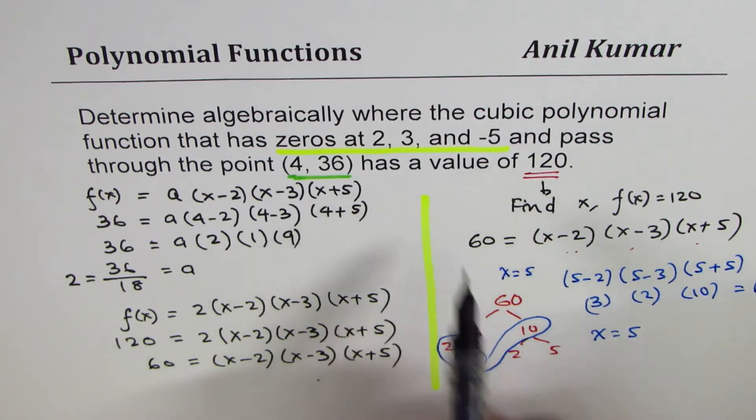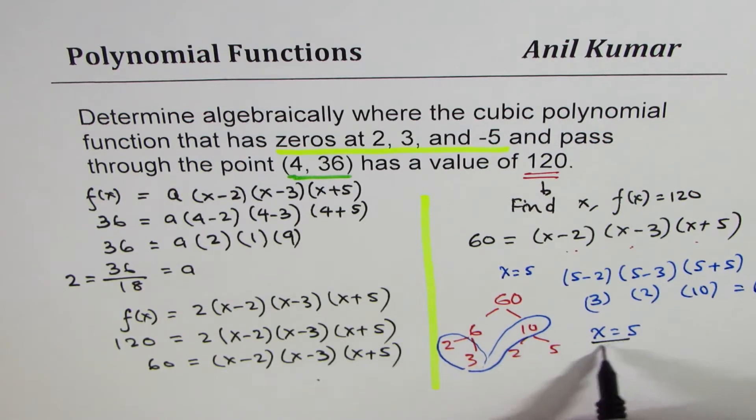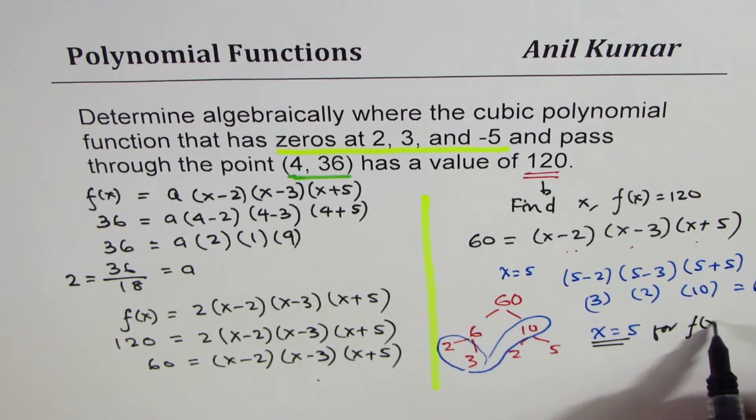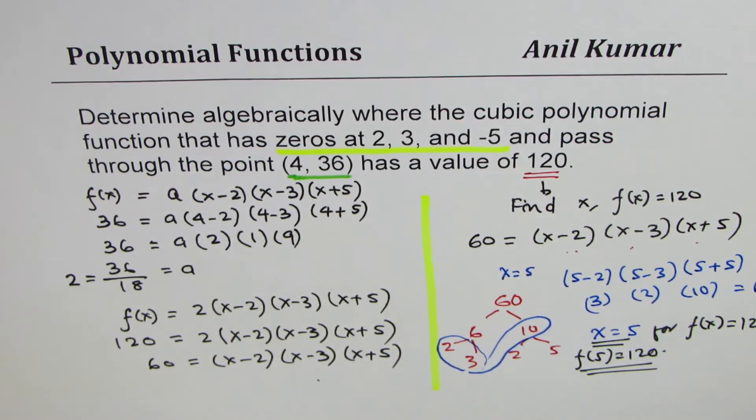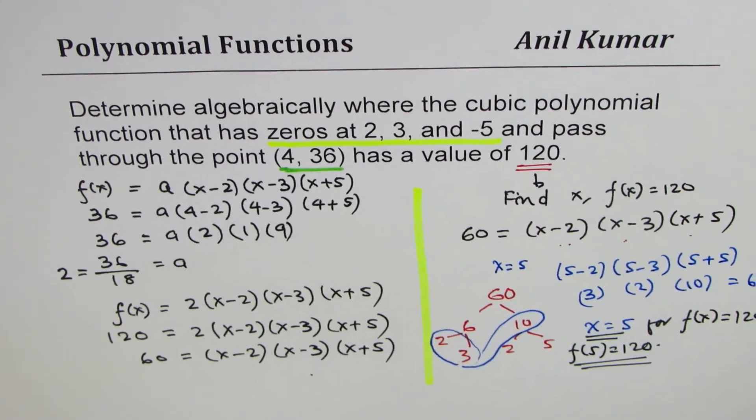So the answer here is that x equals to 5 for f(x) to be equals to 120. So what we are saying is, f(5) is equals to 120. So that is how I'll suggest you to do this question.